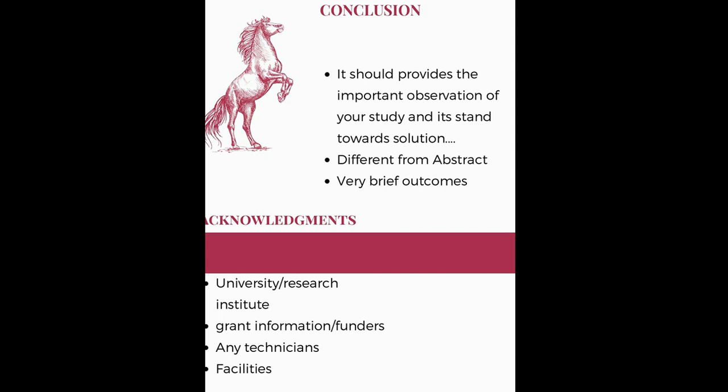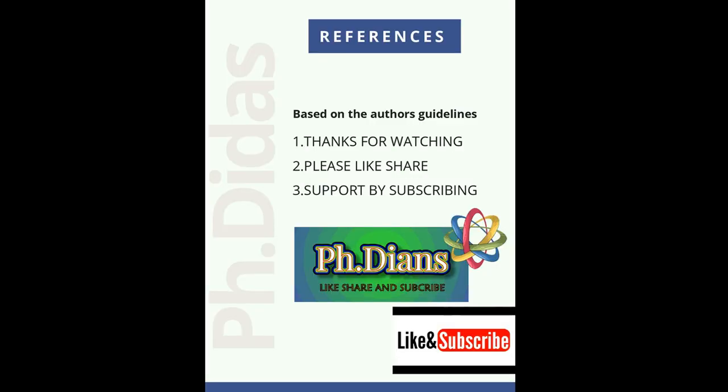The conclusion is followed by acknowledgments, where you thank the facilities, places, or people who helped you carry out the study. You also need to add grant information if you have been funded by any funding agencies. Moving on to references — based on the author's guidelines, follow what kind of references to include. For short communications there are fewer references, like 20 to 25, and for full-length research articles you can provide an optimal 30 to 35 references.